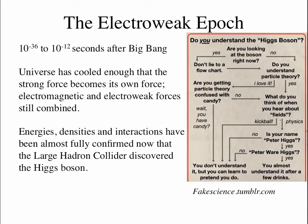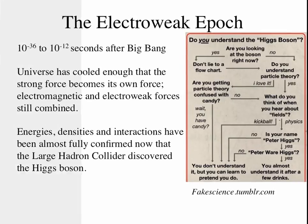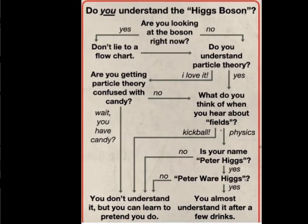After the Grand Unified Theory epoch, the universe continues to expand and cool up until a trillionth of a second after the Big Bang. At this point the strong force breaks away, and the electromagnetic and weak forces remain combined into what we call the electroweak force. This is a well-tested physics theory — in fact, electroweak theory predicted the Higgs boson, which was recently discovered at the Large Hadron Collider. This epoch has temperatures and densities we can reproduce in the lab, and the theory works very well.